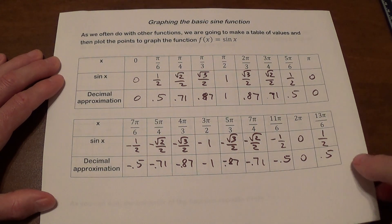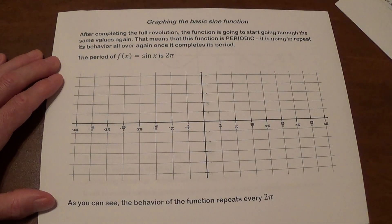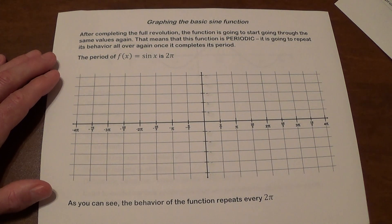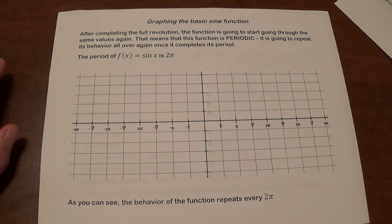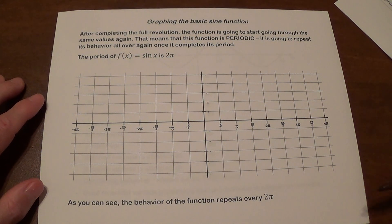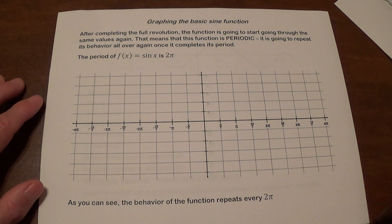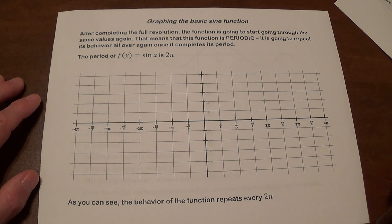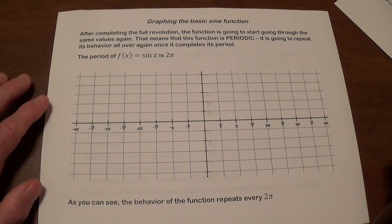These are the values and we are going to plot them to graph our function. The function f of x equals sin x has completed its full period. It went over and it's going to start the values again, because as we already saw for 13 pi over 6, which is when you exceed 2 pi, the values are going to repeat again.